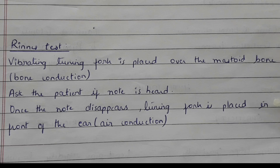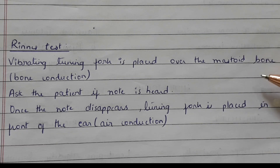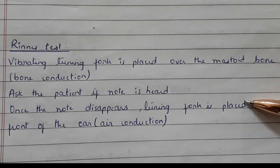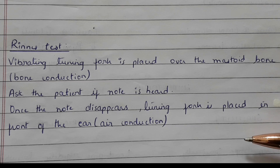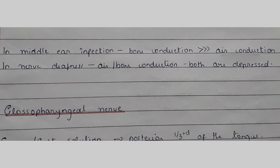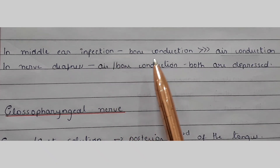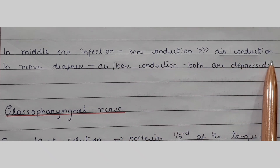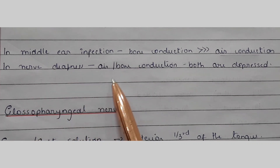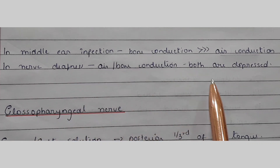For the Rinne test, a vibrating tuning fork is placed over the mastoid bone for bone conduction. Ask the patient if the note is heard. Once the note disappears, the tuning fork is placed in front of the ear for air conduction. Normally, air conduction is heard better than bone conduction. In case of middle ear infection, bone conduction is heard better than air conduction. In case of nerve deafness, both air and bone conduction are depressed.